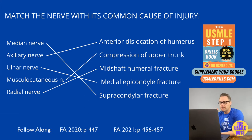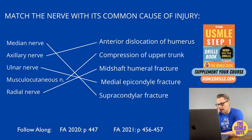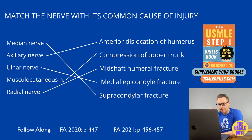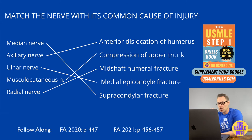Next is the ulnar nerve. It originates from the medial cord of the brachial plexus and is formed from the anterior division of the inferior trunk. The ulnar nerve supplies sensation to the skin over the hypothenar eminence, the medial one-third of the palm, the palmar aspect of the medial one-and-a-half fingers, the medial one-third dorsum of the hand, and the dorsal aspect of the medial one-and-a-half fingers.